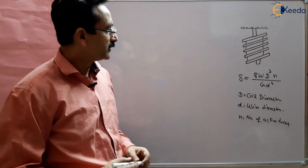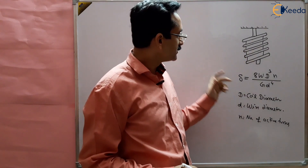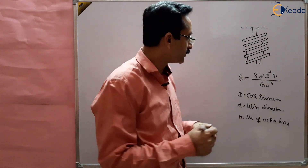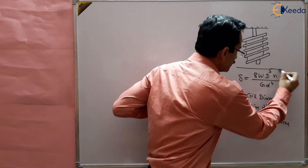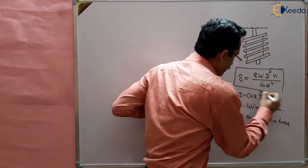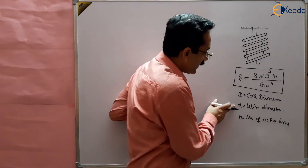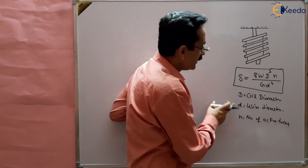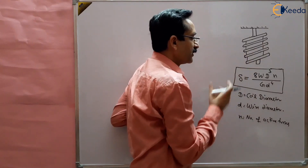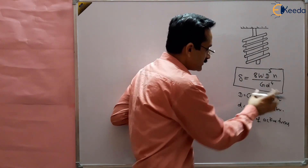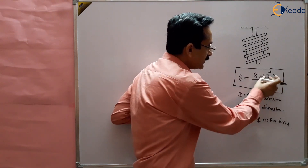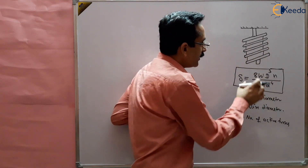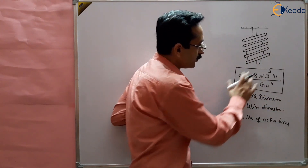This is a question of springs involving a helical spring for which we know the deflection formula. You should remember this formula — it will be used here. Capital D is the coil diameter, n is the number of active turns, W is the weight applied (compressive or tensile load), and G is the modulus of rigidity.